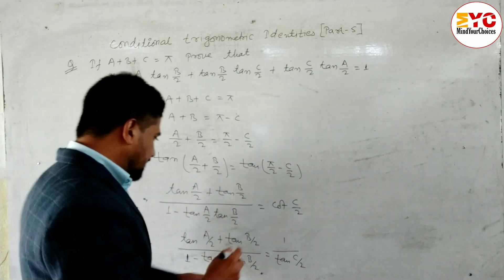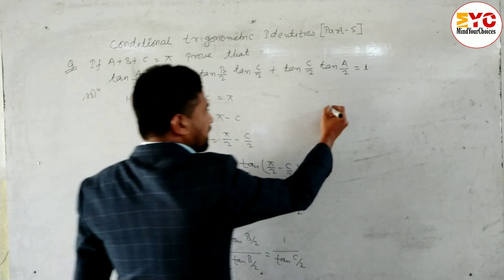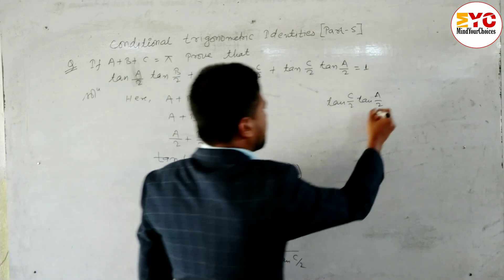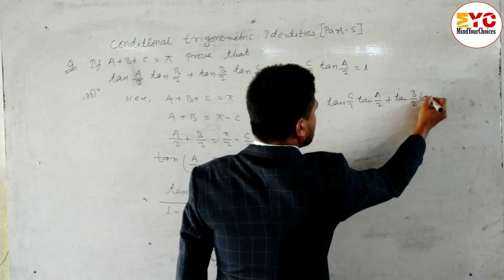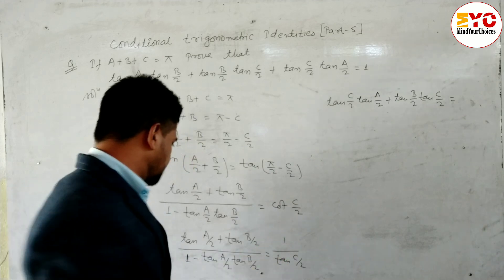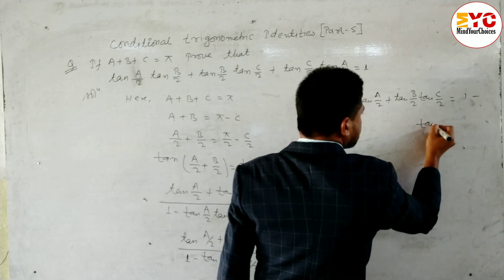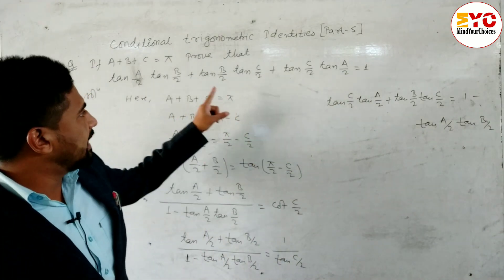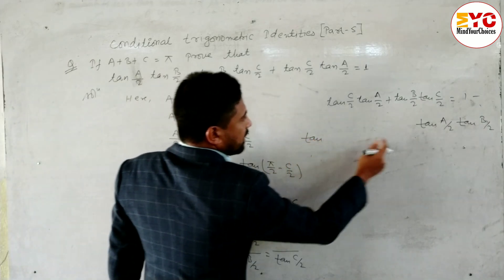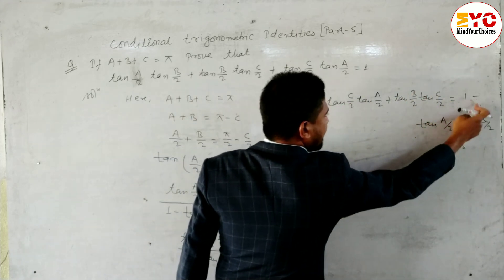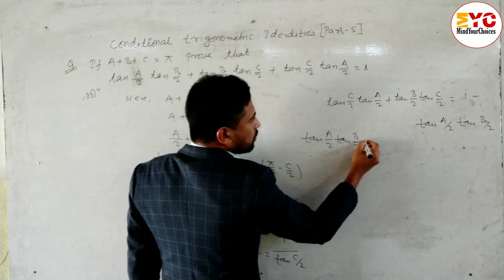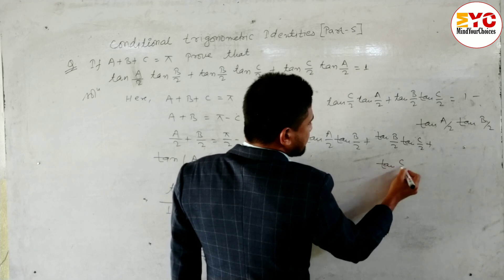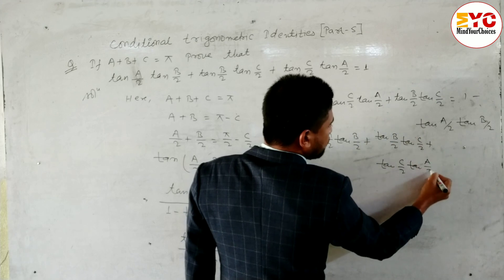After this we cross multiply: tan(a/2) plus tan(b/2) multiplied by tan(c/2) gives tan(a/2)tan(c/2) plus tan(b/2)tan(c/2) on the left, and the right side becomes 1 minus tan(a/2)tan(b/2). Rearranging — taking the negative term to the left side it becomes positive — we get tan(a/2)tan(b/2) plus tan(b/2)tan(c/2) plus tan(c/2)tan(a/2) is equal to 1.